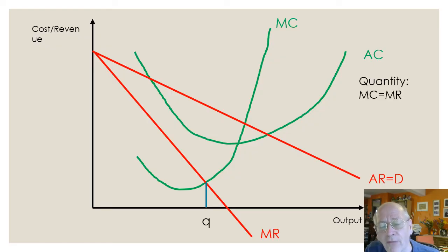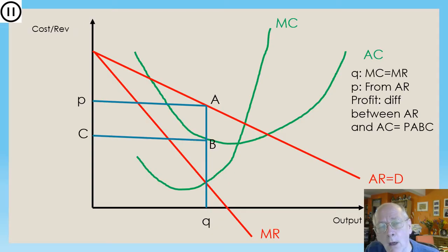We get the profit maximizing quantity from the profit maximizing conditions MC equals MR. And then we chase that up to the demand curve to find what price this quantity will sell at. Logically, the difference between the price and the average cost is the unit profit. And if we multiply that by the number of units, we get the total profit, which is the area PABC.